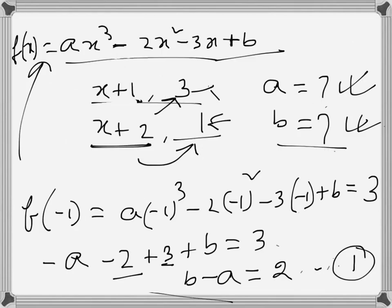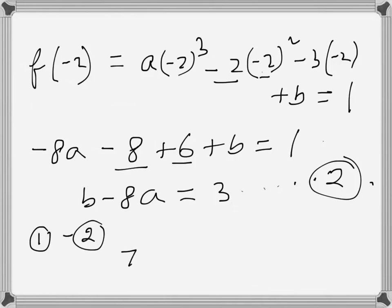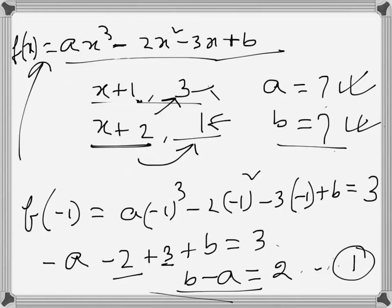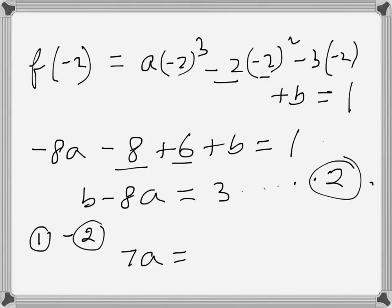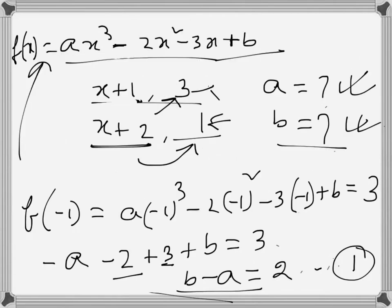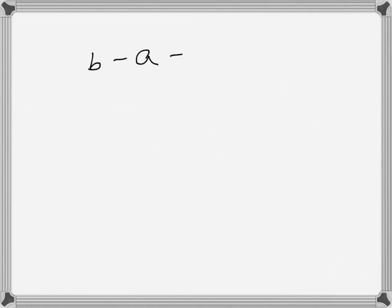Subtracting equation 2 from equation 1: b cancels, leaving 7a = -1, so a = -1/7.